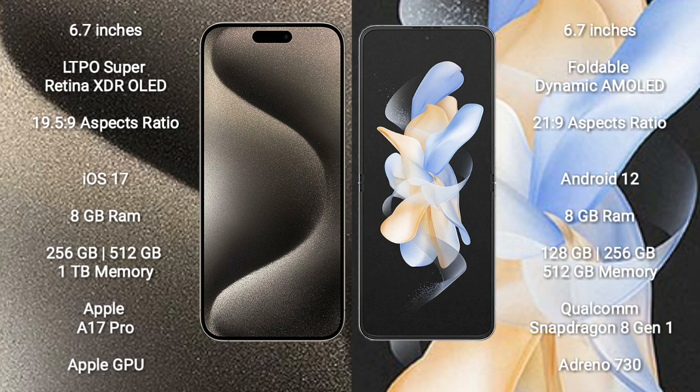iPhone 15 Pro Max comes with 8GB RAM and 256GB, 512GB, or 1TB internal storage, powered by the Apple A17 Bionic Processor and Apple Graphics GPU.